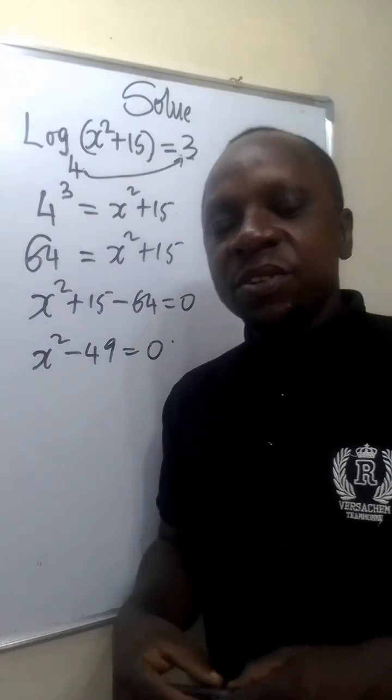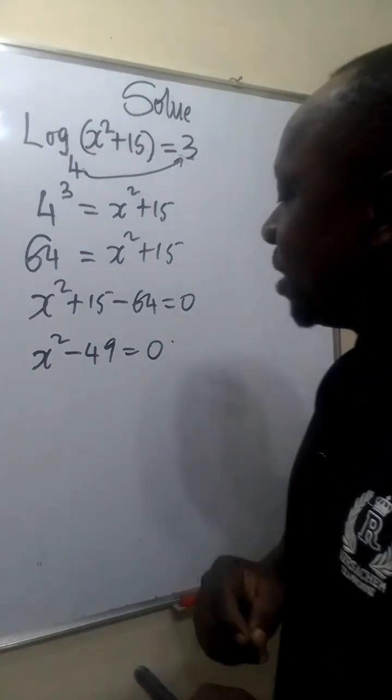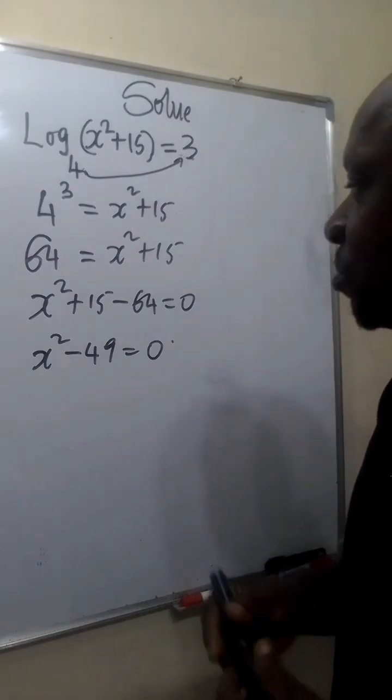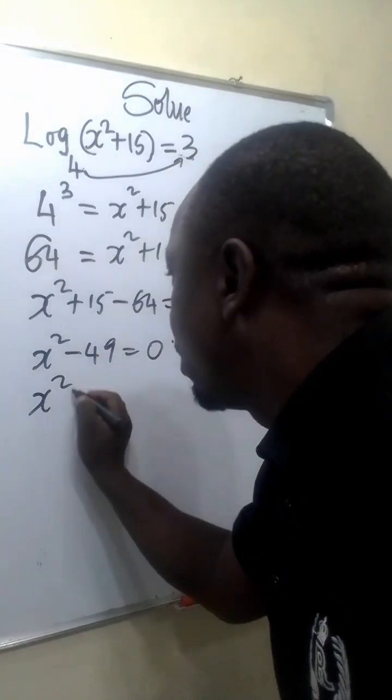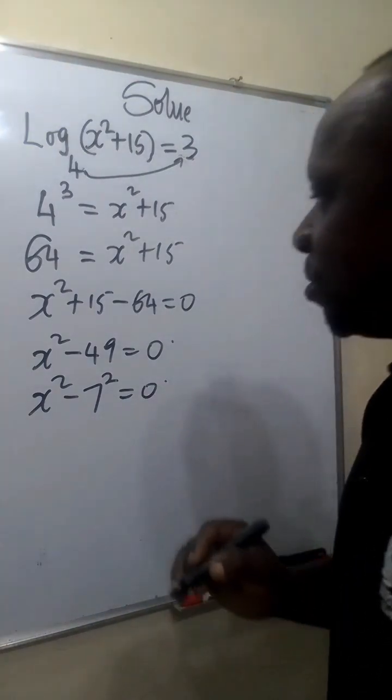This reminds us of the difference of two squares. 49 can be expressed as 7 raised to power 2. So this becomes x squared minus 7 squared equals 0.